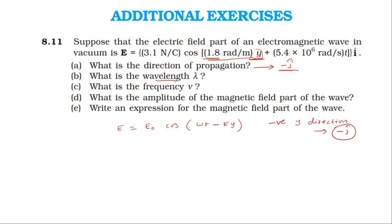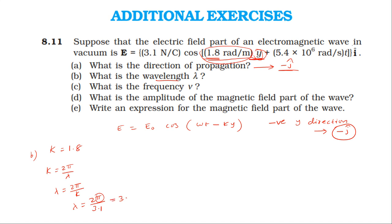To find the wavelength, we take the coefficient of y, which is k = 1.8 radian per meter. Since k = 2π/λ, we get λ = 2π/k = 2 × 3.14 / 1.8, which gives us approximately 3.5 meters.